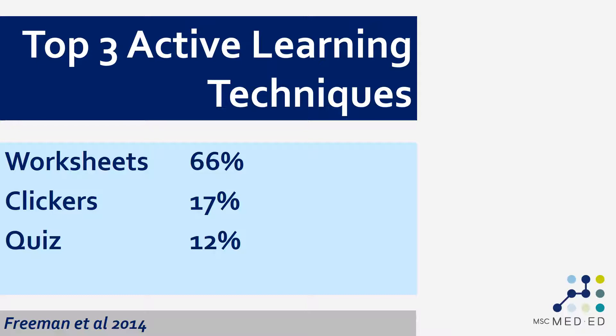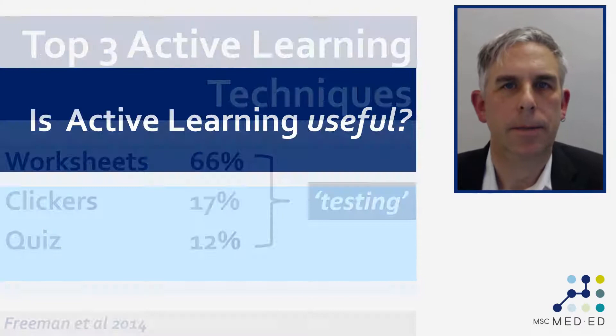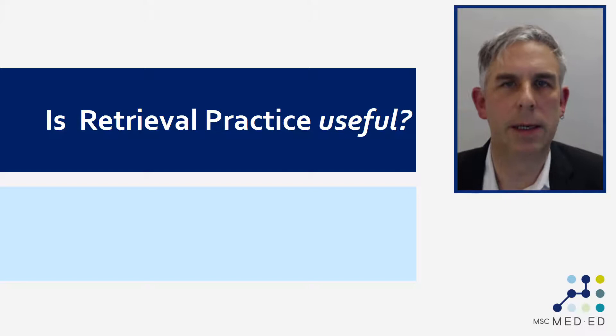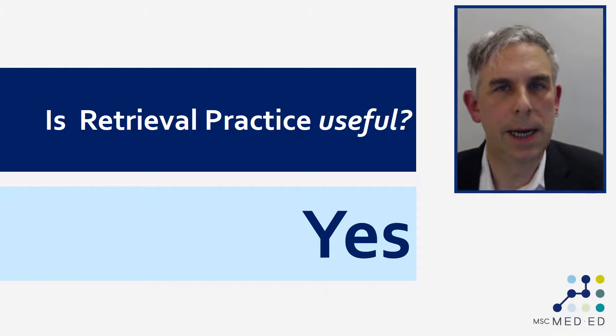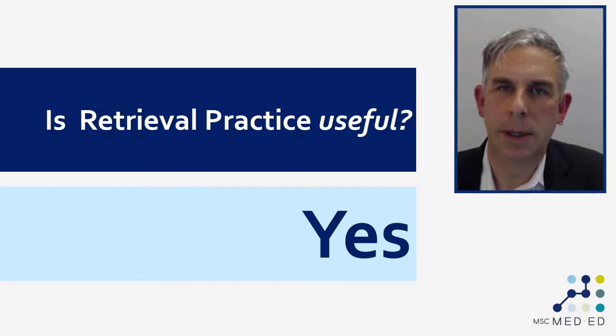We can do a simple analysis of that coding. You can see that 66% of the studies used some sort of worksheet, 17% used clickers, and 12% used quizzes. These things all have something in common — they're all some form of test or active retrieval. So if the question is whether active learning is useful, it's reasonable to say that some significant component of it clearly involves retrieval practice: some form of testing, quizzing, or other way of bringing information to mind. In a different video released this week we've asked the question about whether retrieval practice is useful, and the answer is categorically yes. That does get us some way towards understanding what to do if we want to use active learning — build in some form of retrieval practice.